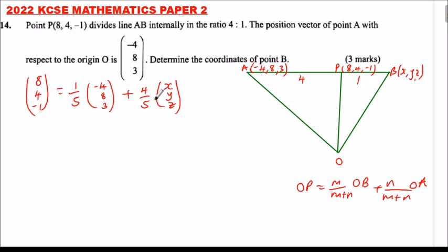So, if we are able to get X, Y, and Z then we will be able to determine the coordinates of point B. So, we multiply throughout by 5. When we multiply 8 by 5 you get 40, 4 by 5 you get 20, 5 multiplied by minus 1 that will give us minus 5.